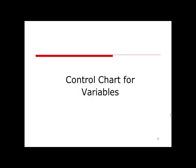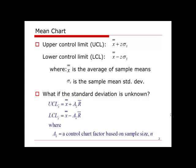In this section we will talk about how to construct control charts for variables. Control charts for variables include the mean chart, which is used to trace the central tendency of the process, and the range chart, or R chart, which is used to trace the dispersion of the process. For the mean chart, there are two ways to construct the control limits.